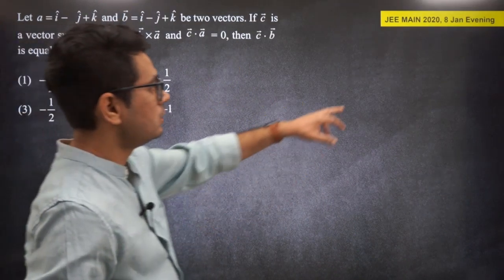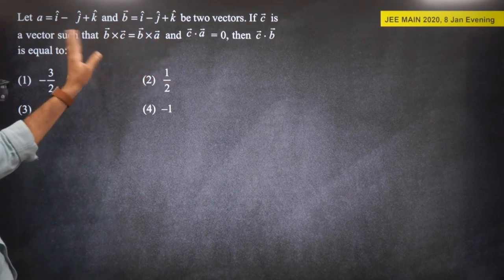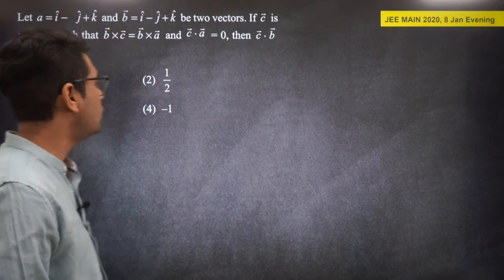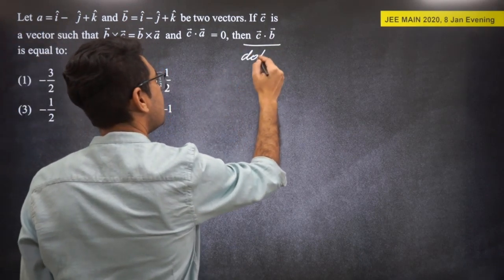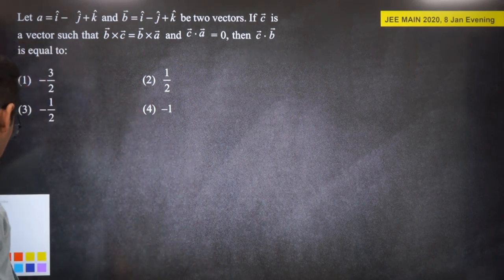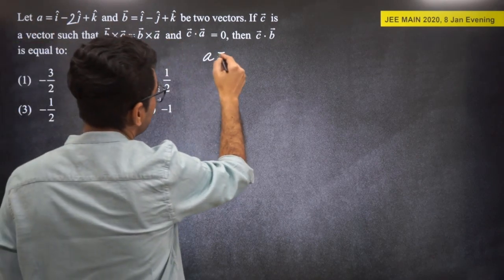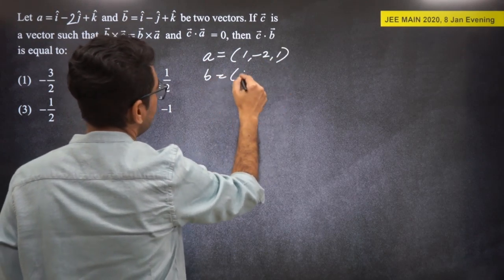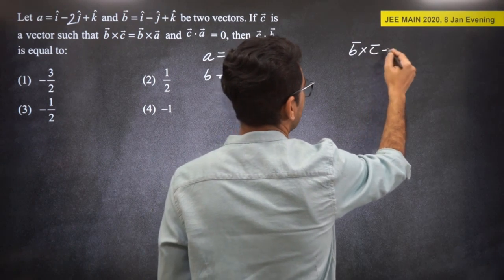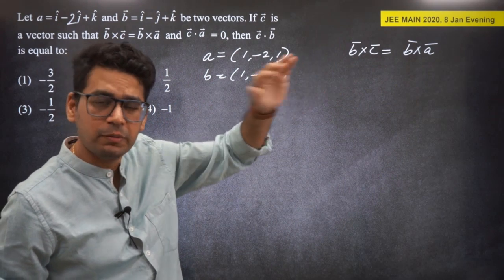Next question: JEE Mains 2020, 8th January evening. Let A = (1, -2, 1) and B = (1, -1, 1) be two vectors. C is a vector such that B×C = C×A (equivalently B×C - B×A = 0, so B×(C - A) = 0), and B·A = 0. Find C·B.